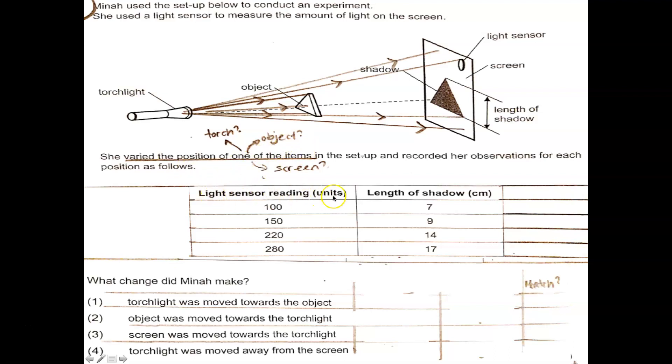So we have some sensor readings. The first set of reading is 100 units of light. And the length of the shadow was 7 cm. And somehow, as the light intensity increases from 100 to 150, all the way to 280, as this increases, as it becomes brighter and brighter, the length of the shadow also becomes longer and longer.